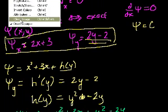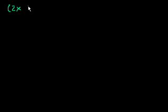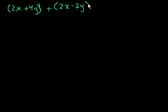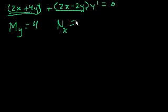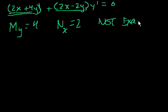Let's do another one. This equation is: 2x plus 4y plus 2x minus 2y times y prime equals 0. The partial of M with respect to y is 4. The partial of N with respect to x is 2. Since 4 does not equal 2, the partial of M with respect to y is different from the partial of N with respect to x, so this equation is not exact. We can't solve it using exact equation methodology.